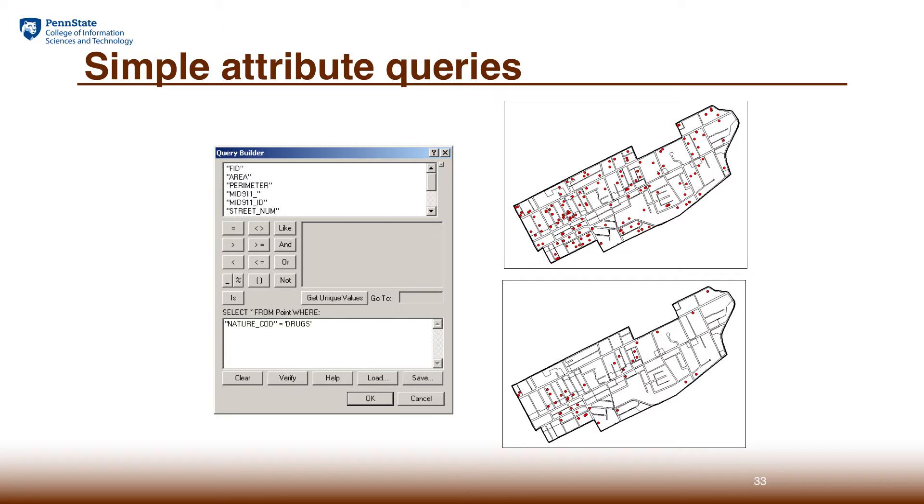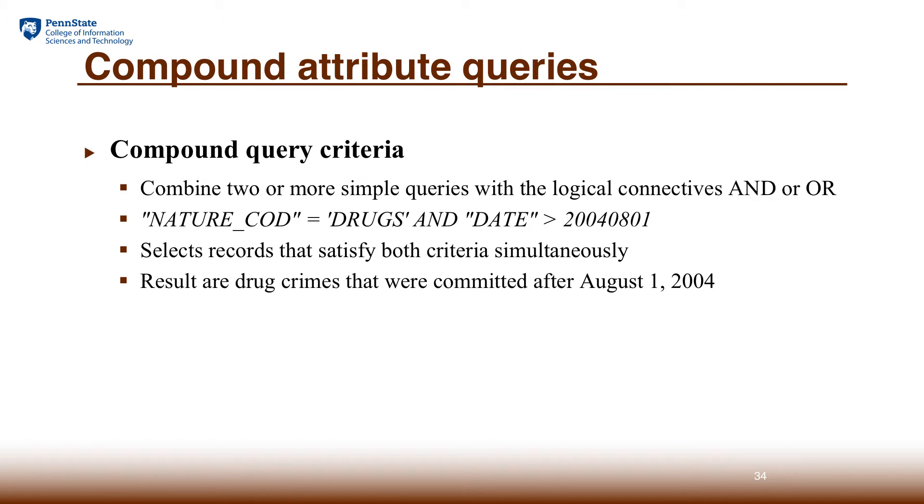The more complex case is to concatenate multiple simple criteria into a combination of AND and OR operators. So AND means the two conditions have to be met simultaneously. And the OR operator, if connected to two criteria, means more of a union concept. So what we need to learn is to get used to the concept of AND and OR operators for specifying queries.